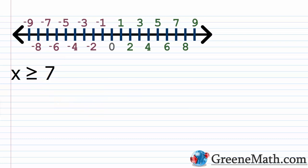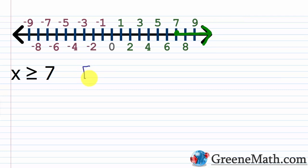For x is greater than or equal to 7: graphically, place a bracket facing right at 7 and shade everything to the right, or use a filled-in circle at 7. In interval notation, we write [7, ∞) — a bracket next to 7 showing 7 is included as the smallest value, then comma, then infinity with a parenthesis. Always use a parenthesis with infinity.